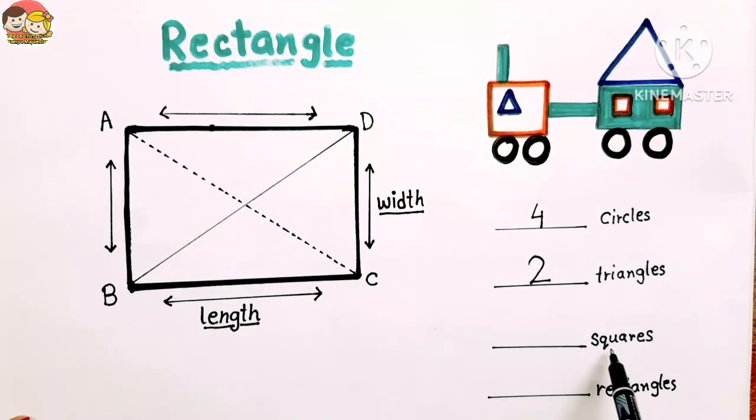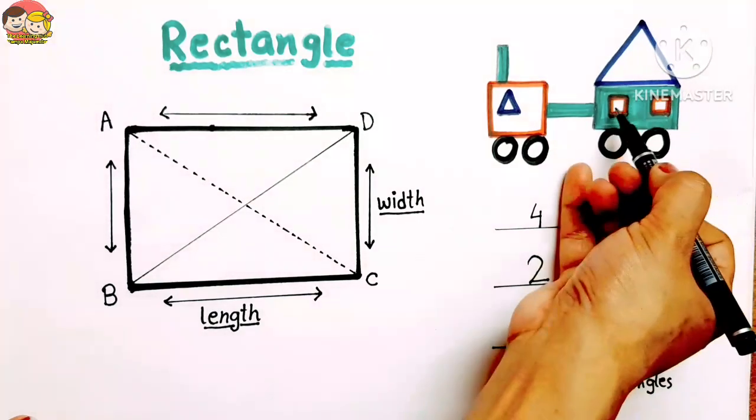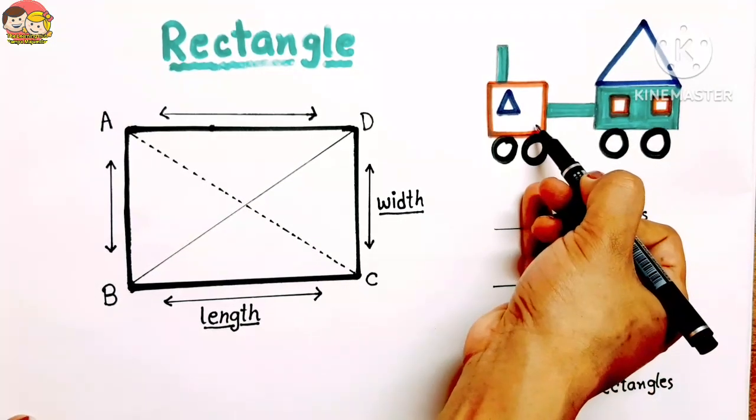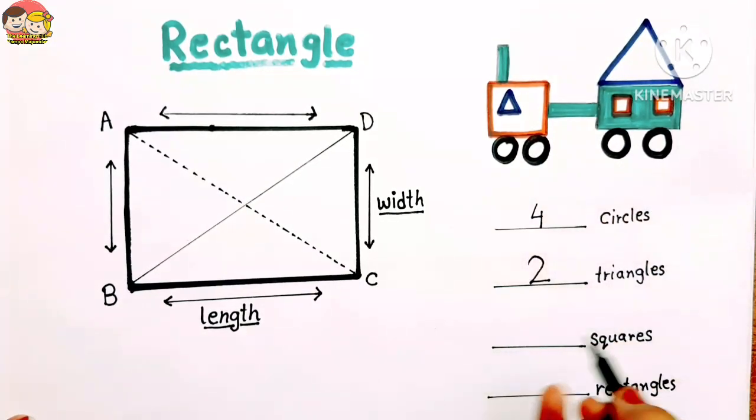Next, squares. How many squares are there? Let's count: 1, 2, and 3. So there are 3 squares.